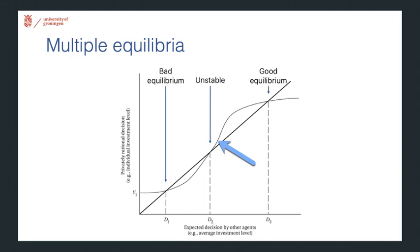Similarly, if you're at this point above, what's privately rational is higher than what they expect others to do. So you walk down the reaction curve until you get to this equilibrium. Now here, this is the good equilibrium, obviously, because investment levels are much higher than in the bad equilibrium over here.